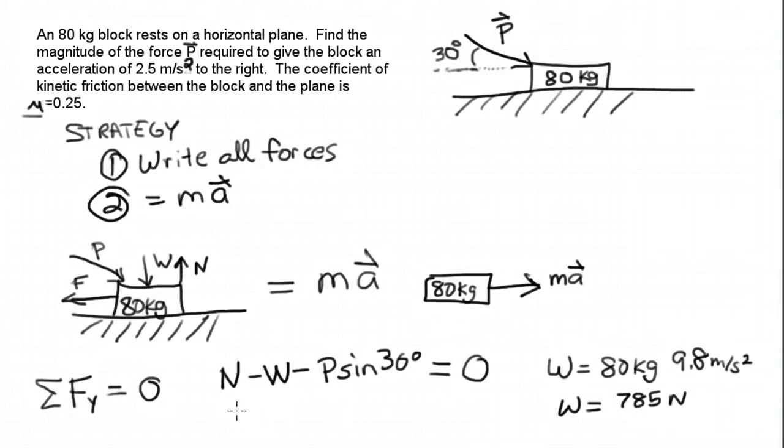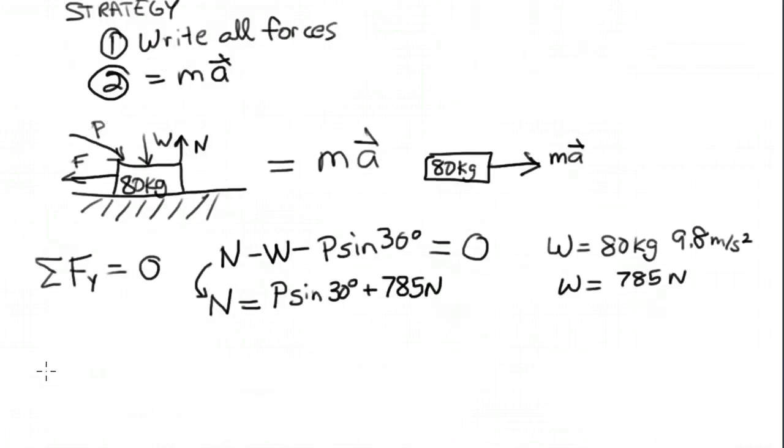I can use the weight and plug it back in here. We've got N equals P sine 30 degrees plus 785 newtons.